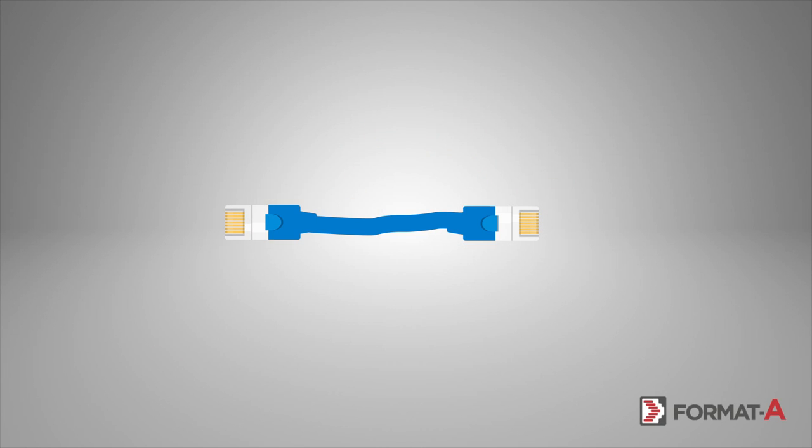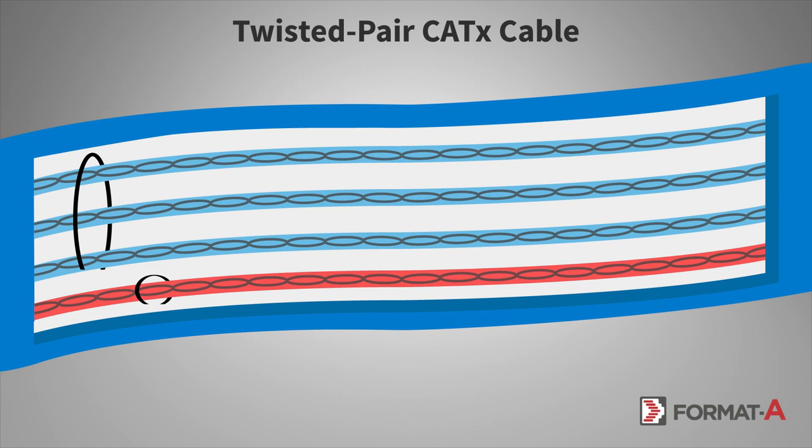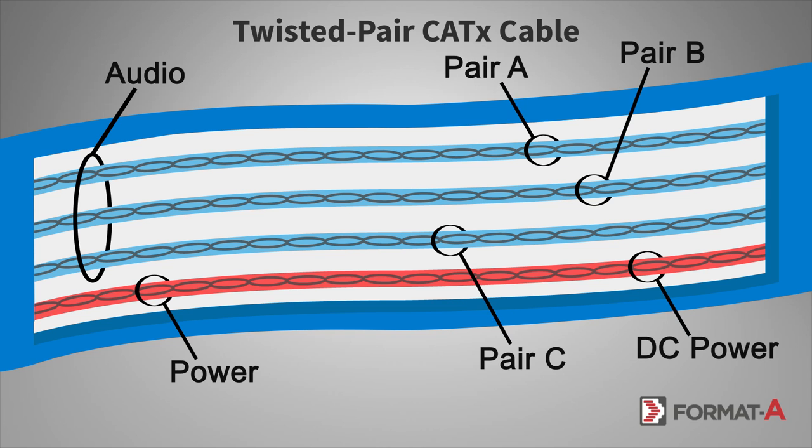Format-A is an audio transmission solution that provides short or long distance audio transmission over twisted pair cable. Each cable run carries three audio signals and DC power for remote Format-A modules.